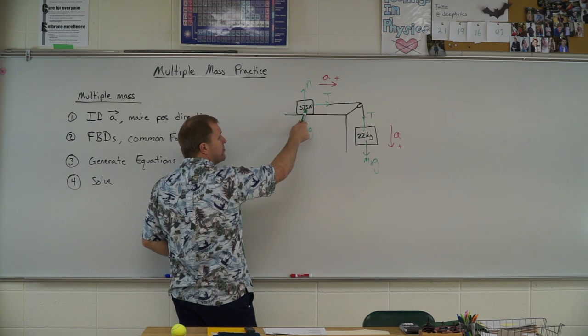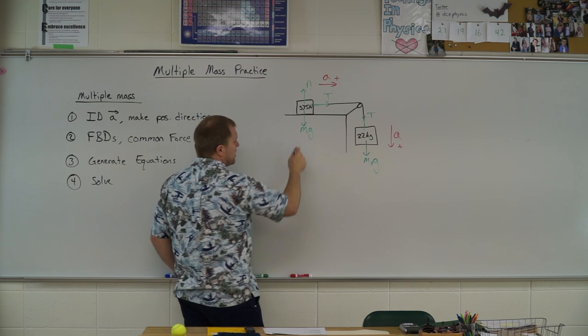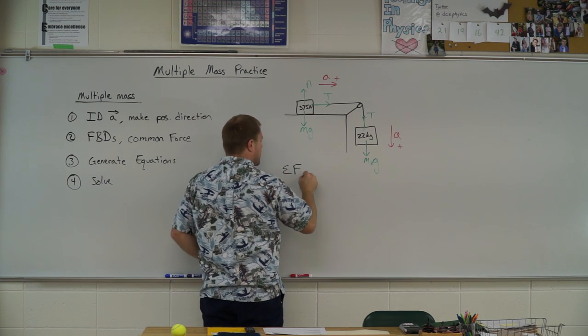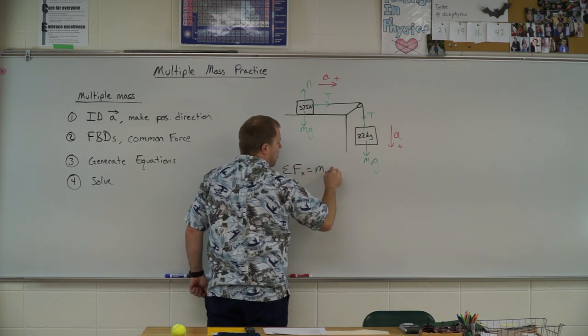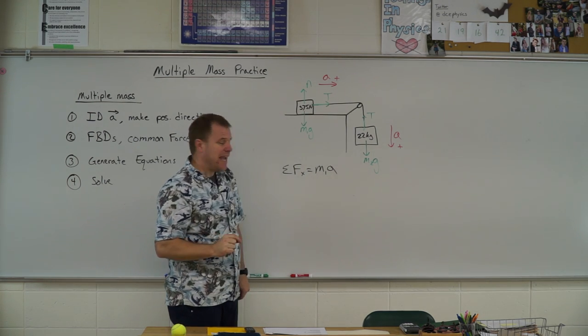So you might need to divide this by 9.8 to find mass one when we generate our equations. Because over here I'm going to get the sum of the forces in the x equals m1a, so in order to find that m1, you're going to have to divide that number by 9.8.